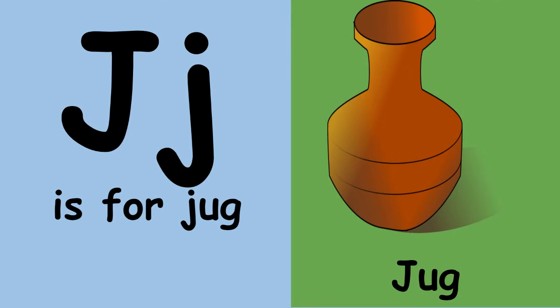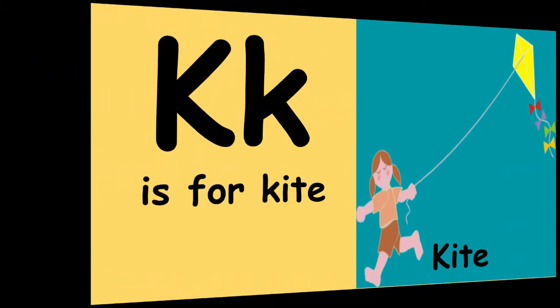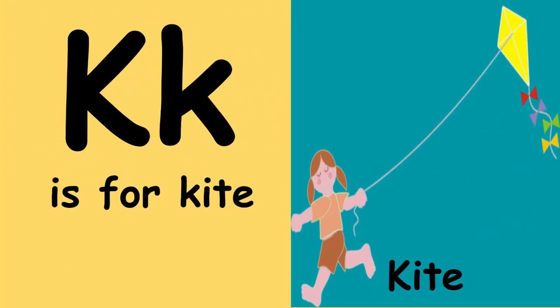J is for jug. J, jug, j. K is for kite. K, kite, k.